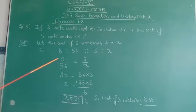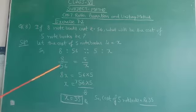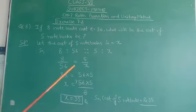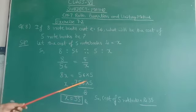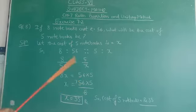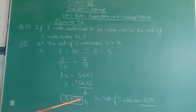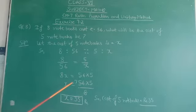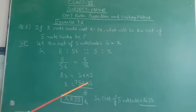By cross multiplying, 8 into X is equal to 56 into 5. So the value of X is 56 into 5 upon 8. 8 times 7 is equal to 56. Now the value of X is 35 rupees by the product of 7 into 5.